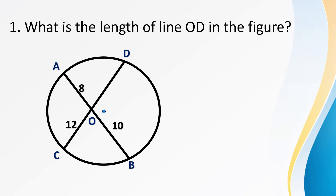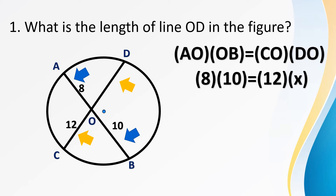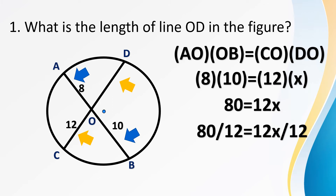Using the theorem: line segment AO times OB should be equal to the product of CO times DO. Since we don't know DO, let's call it X. So, 8 times 10 equals 80, and 12 times X is 12X. Divide both sides by 12 to isolate X. So 80 divided by 12 is equal to 6.67. That's the value or the length of line segment DO.